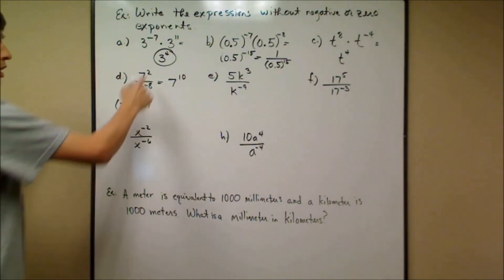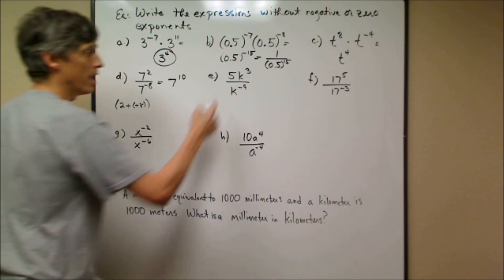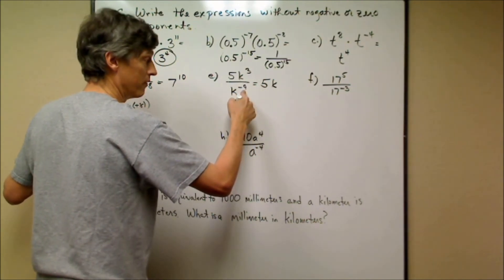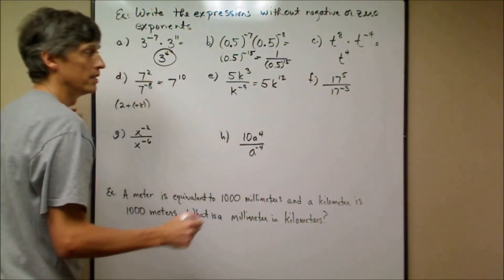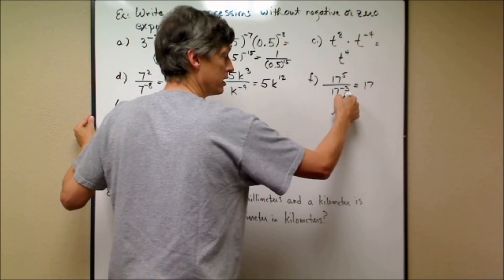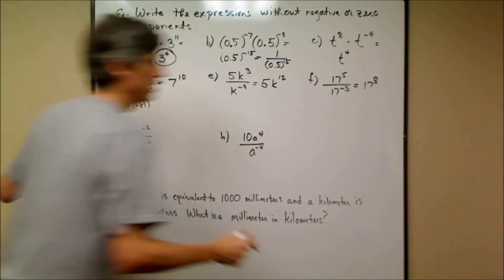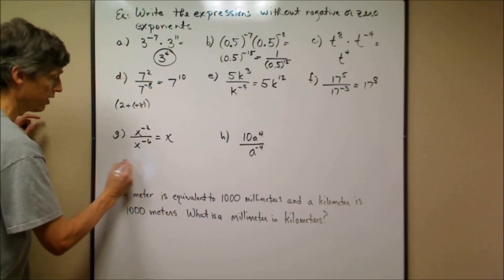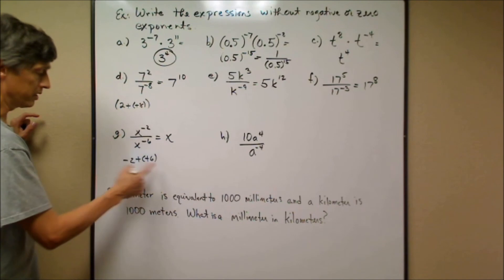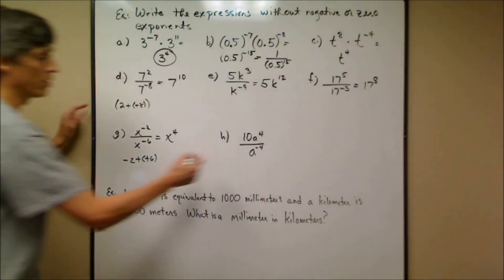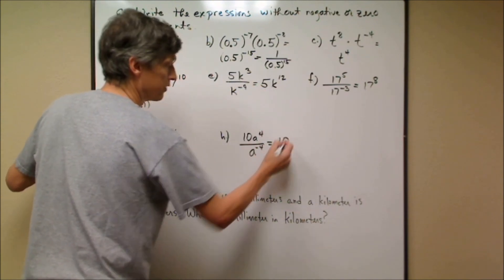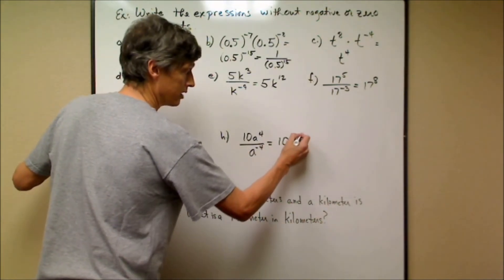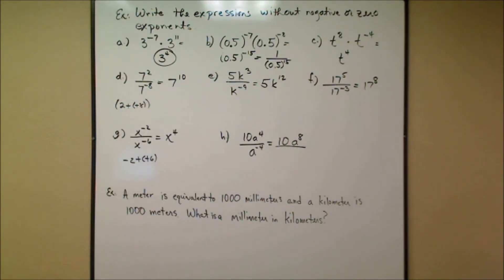For 5k^3 ÷ k^(−9), subtract exponents: 3 minus (−9) = 3 + 9 = 12, giving 5k^12. For 17^5 ÷ 17^(−3), subtract: 5 minus (−3) = 5 + 3 = 8, giving 17^8. For the trickier one with negative 2 minus negative 6: that's the same as −2 + 6 = positive 4. And with a coefficient of 10, subtracting: 4 minus (−4) = positive 8, giving 10a^8.